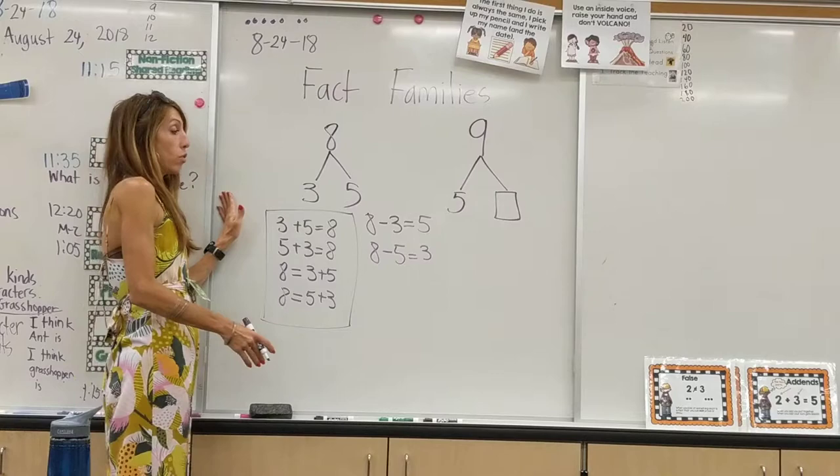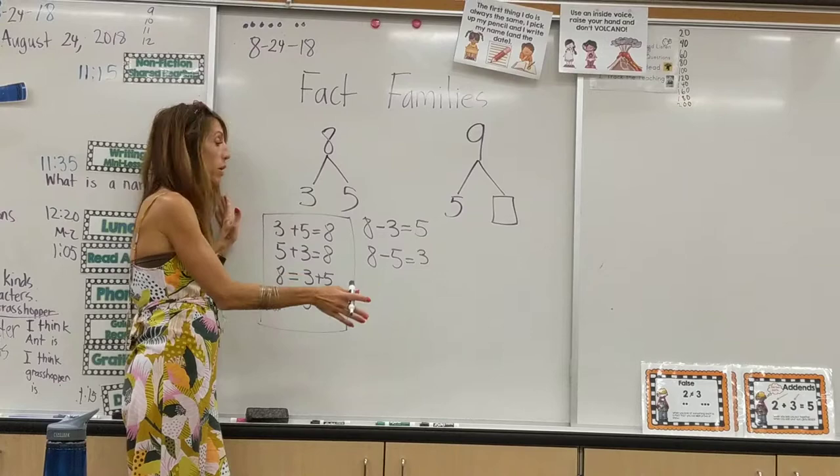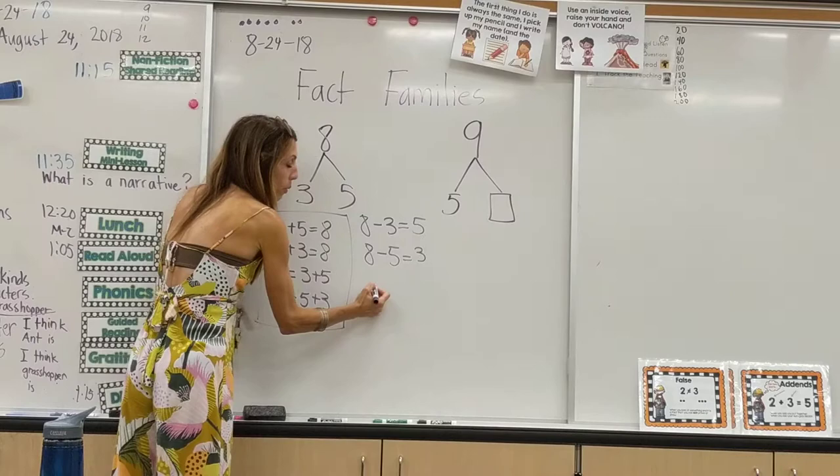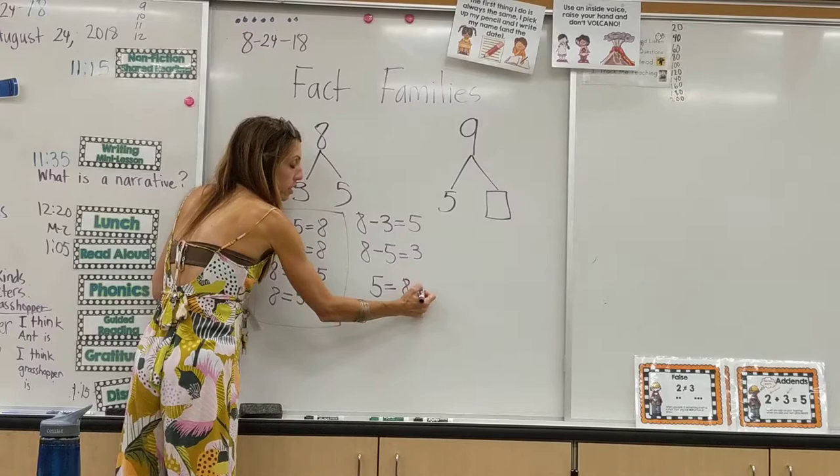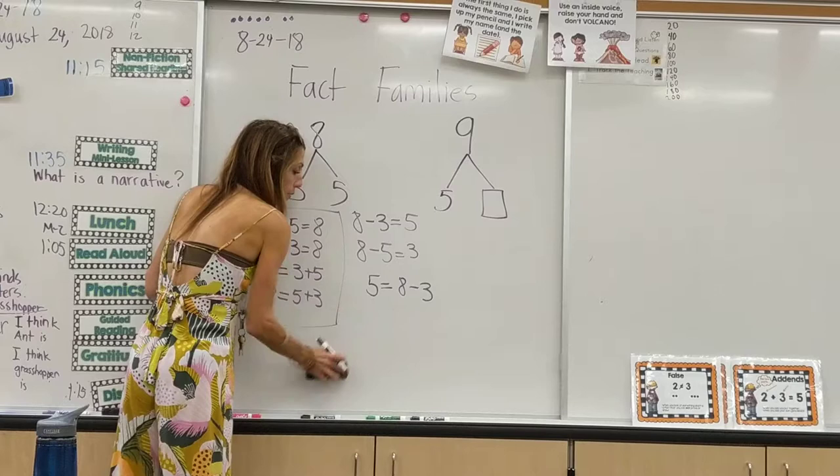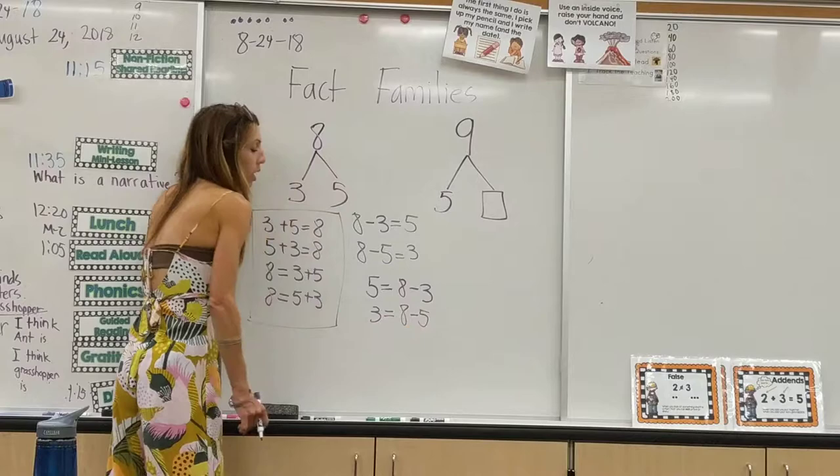Now, this is the most common way we write subtraction. However, there's a more advanced way which we haven't gone over, but we will in the future, where we put five equals eight take away three, and five equals eight take away five.